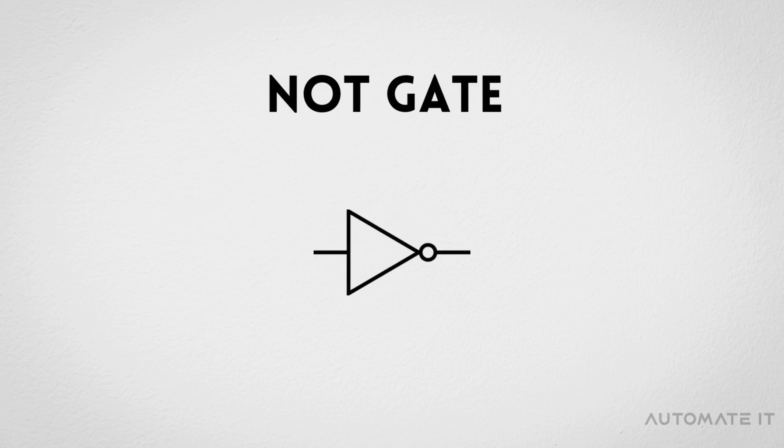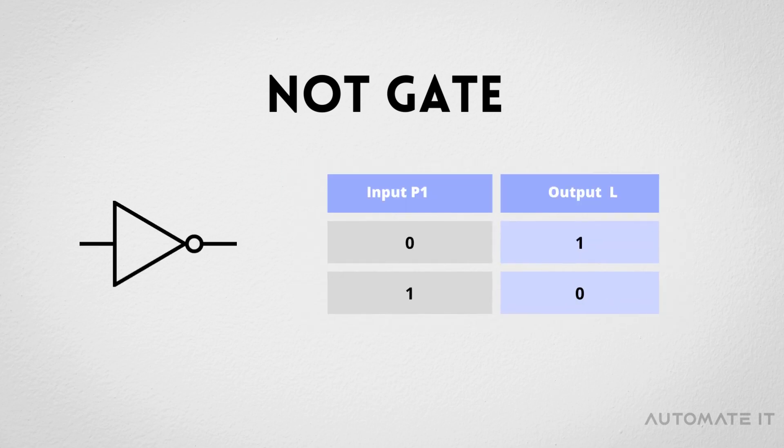NOT-GATE. In electronics, NOT-GATE is also called an inverter or buffer. NOT-GATE works as inversion. It takes one input and gives one output.